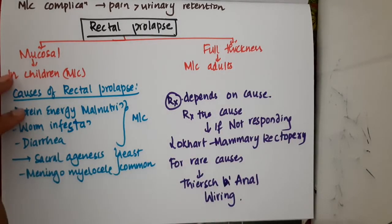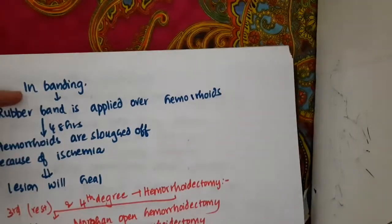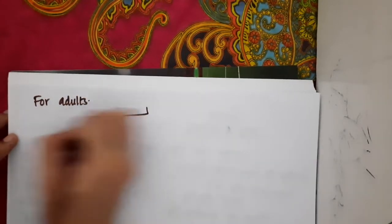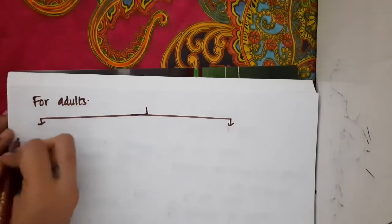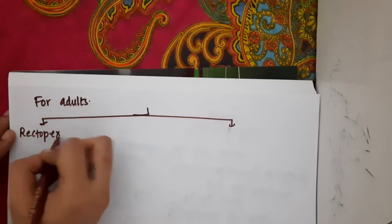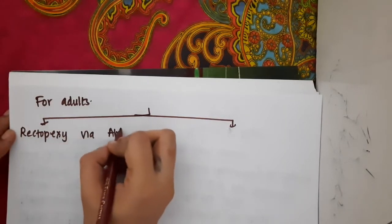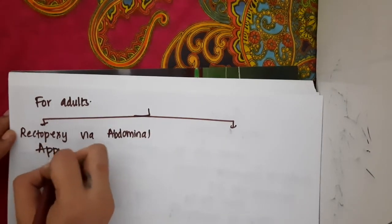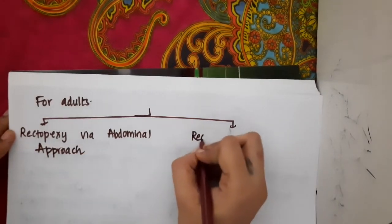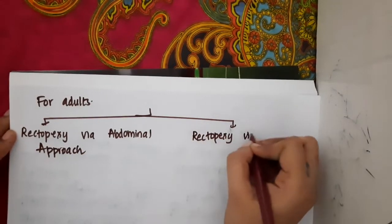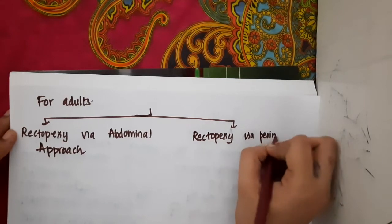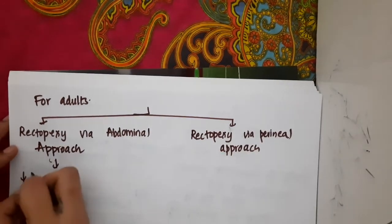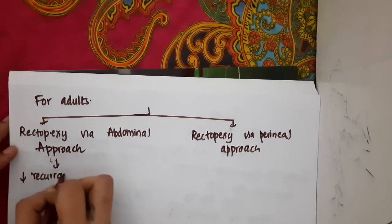What about in adults? For adults with rectal prolapse, we have two procedures which can be done. One, we can do rectopexy via abdominal approach — where you will attach the rectum to the nearby structures by sutures. Or, we can also do rectopexy via perineal approach. Rectopexy via abdominal approach will decrease the recurrence rate.